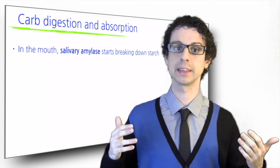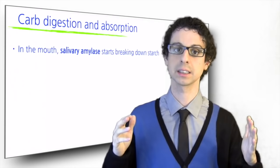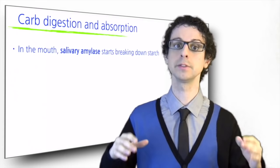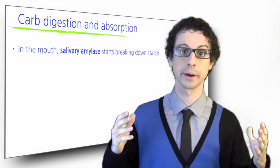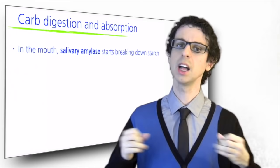In our mouth, the enzyme salivary amylase starts breaking down starch into smaller units, but it is soon inactivated by the stomach acidity. You can notice the activity of salivary amylase if you chew thoroughly a piece of bread. After a while, it will start becoming sweeter. This is because some starch has been broken down to maltose.